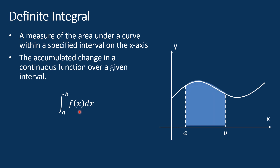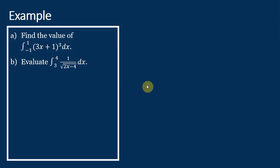The definite integral represents the area under the curve of f(x) from x equal to a to x equal to b. Now let's see this example: find the value of the integration from negative 1 to 1 of (3x + 1) to the power of 3.